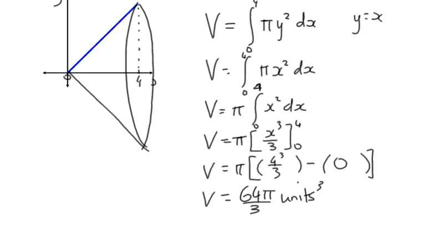That's it. That's the volume of the cone that we would get if we rotate the line y equals x around the x-axis and consider the volume between 0, x equals 0, and x equals 4.